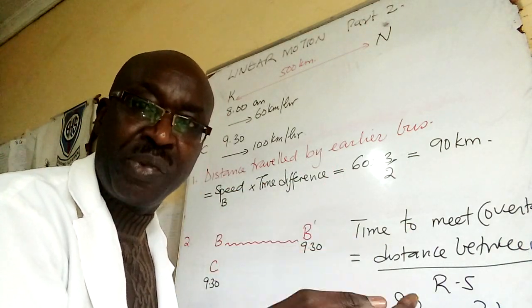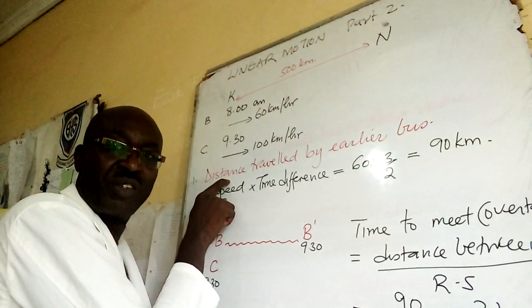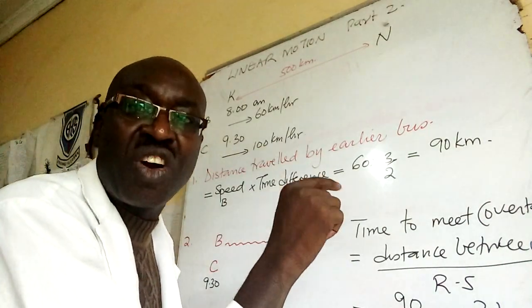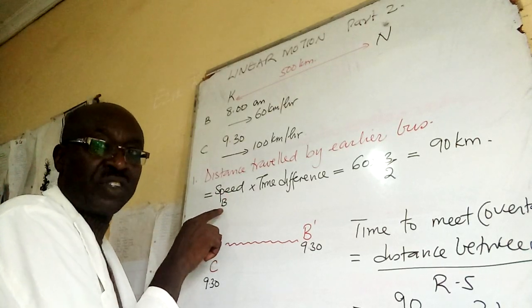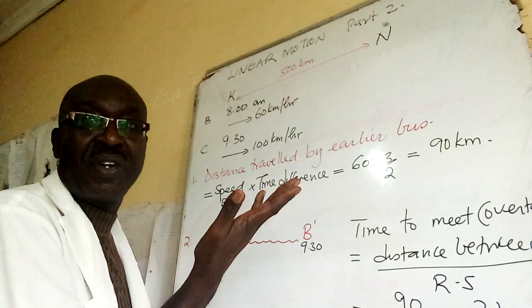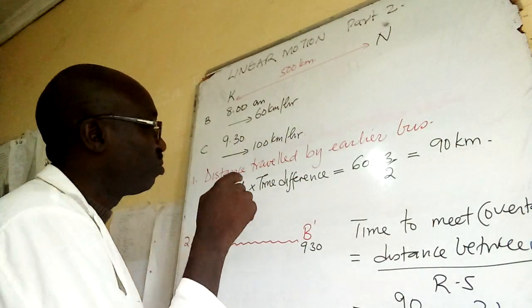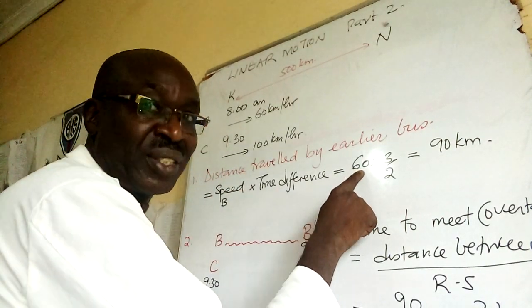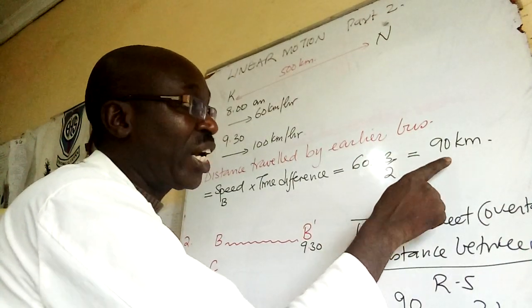What does that lead me to? That gives me a tool to calculate the distance the bus traveled, which is speed of the bus times time difference. Time difference is one hour 30 minutes, one and a half, three over two. 60 is the speed of the bus, time is one and a half, three over two. I get 90 kilometers.